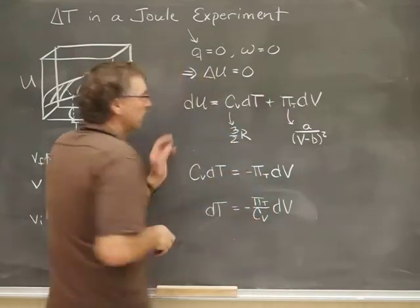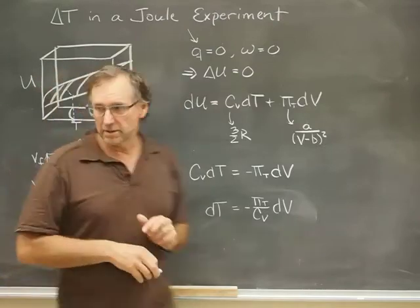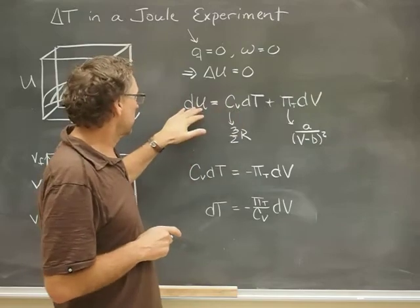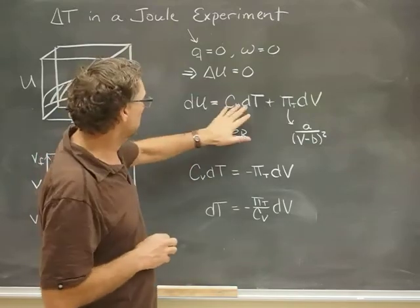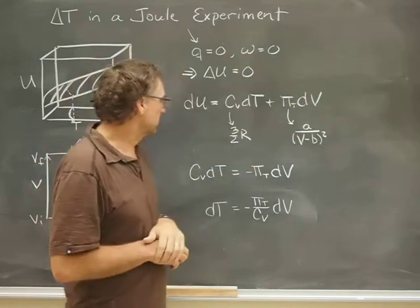Now, we have a differential equation of state that would have to happen along that adiabat, along this curve here, and it goes something like this. The change in U, which we think is zero, is going to be the change in temperature times the heat capacity Cv times dT, plus the change in volume times the πT.